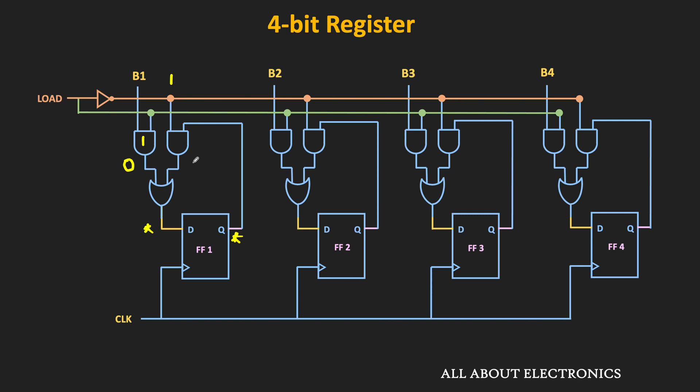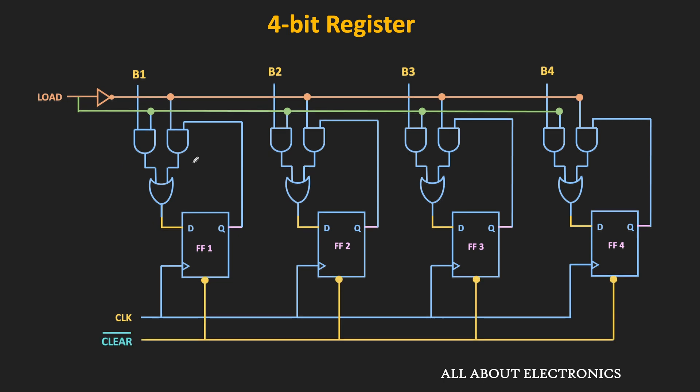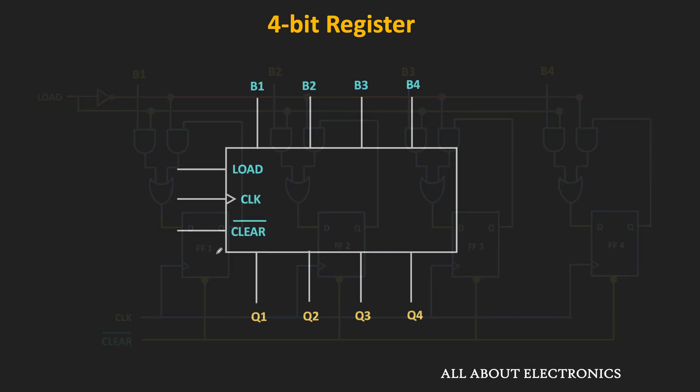So along with the load signal, we can also have the asynchronous clear input. As you can see, this clear input is active low. That means whenever this clear input is low, all the flip-flops in the register will get reset to 0. So if we represent the same circuit in the block diagram, this is how it can be represented. Here, B1 to B4 are the inputs, while Q1 to Q4 are the outputs. And apart from that, we also have this load signal and the clear input.